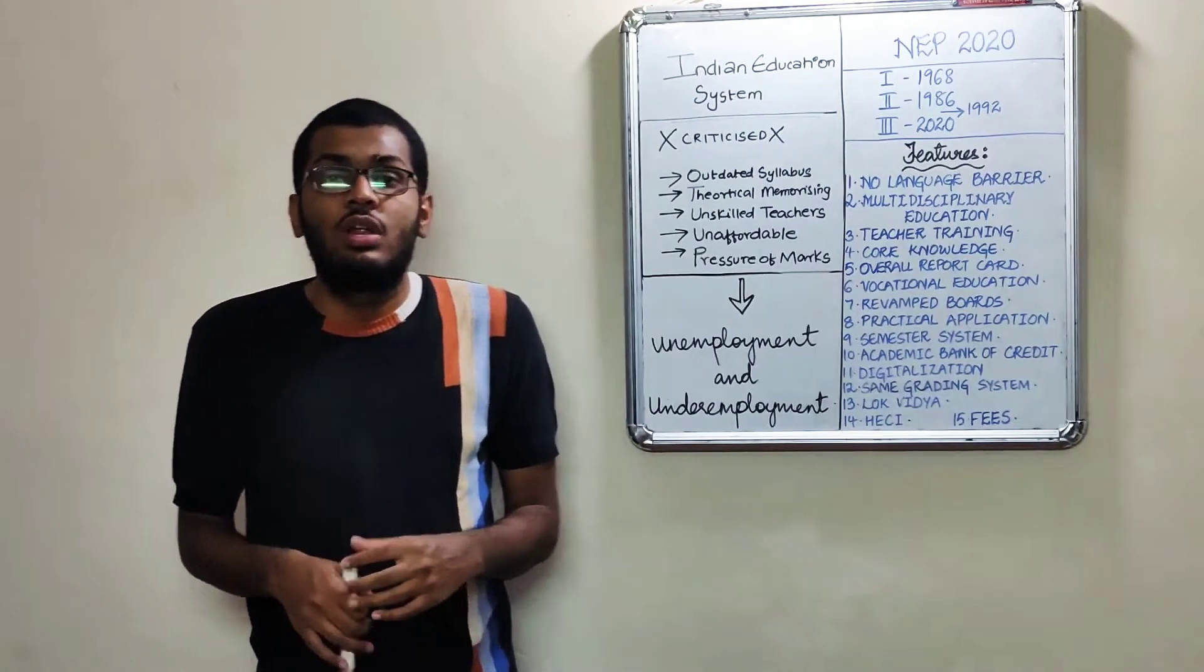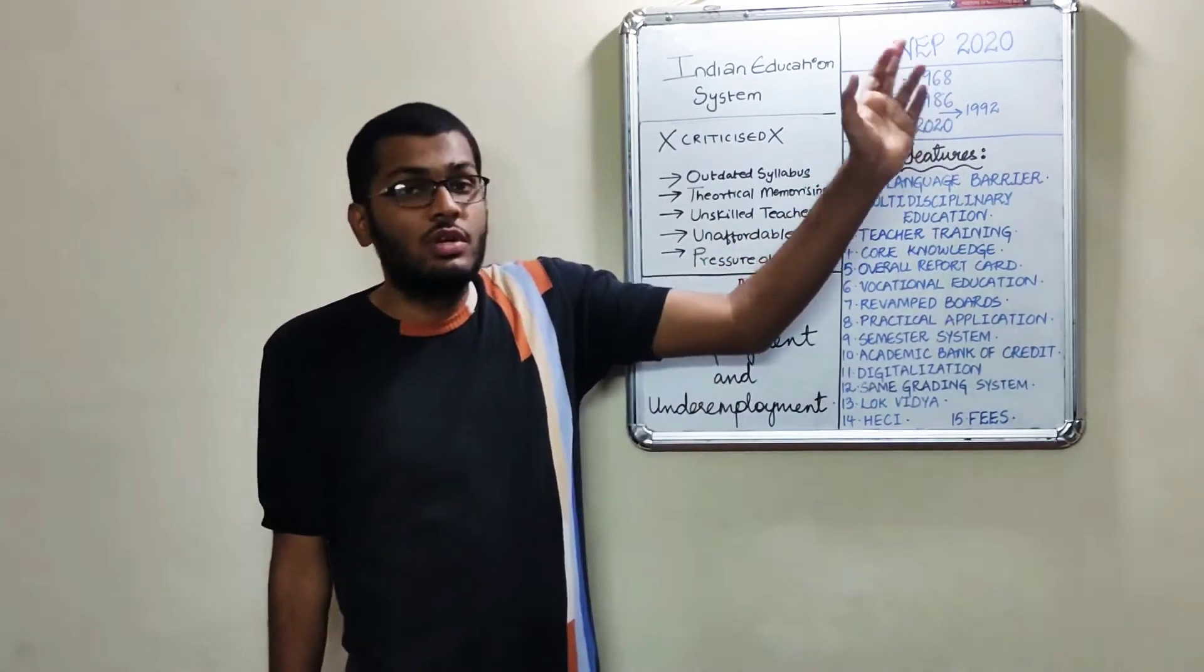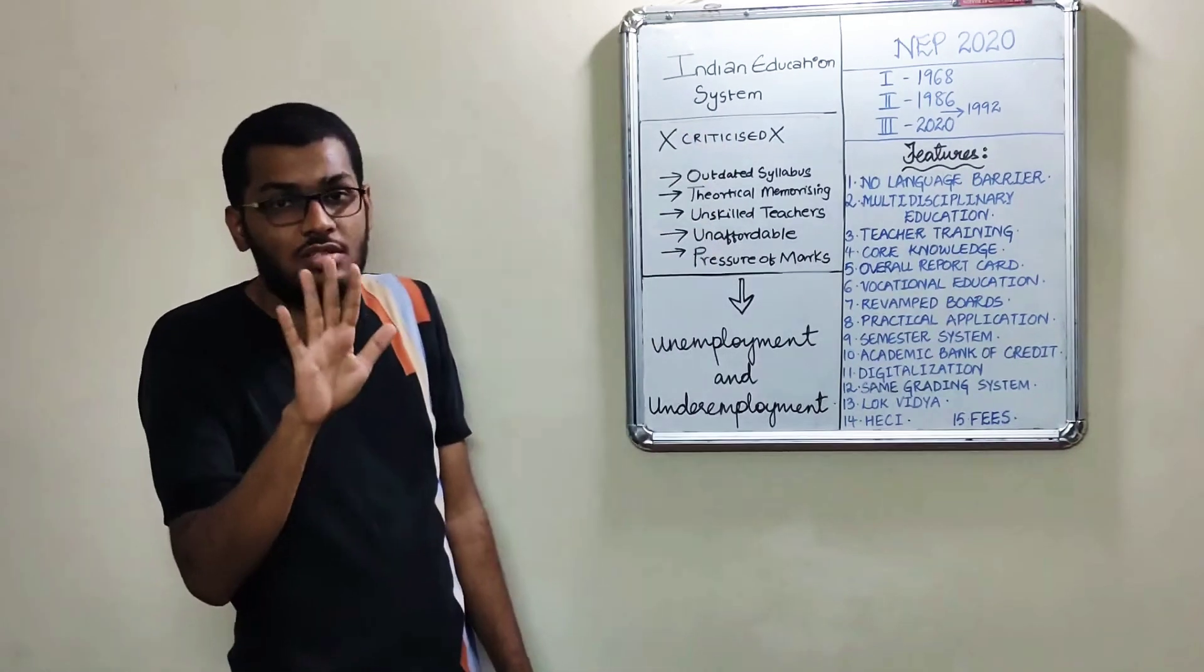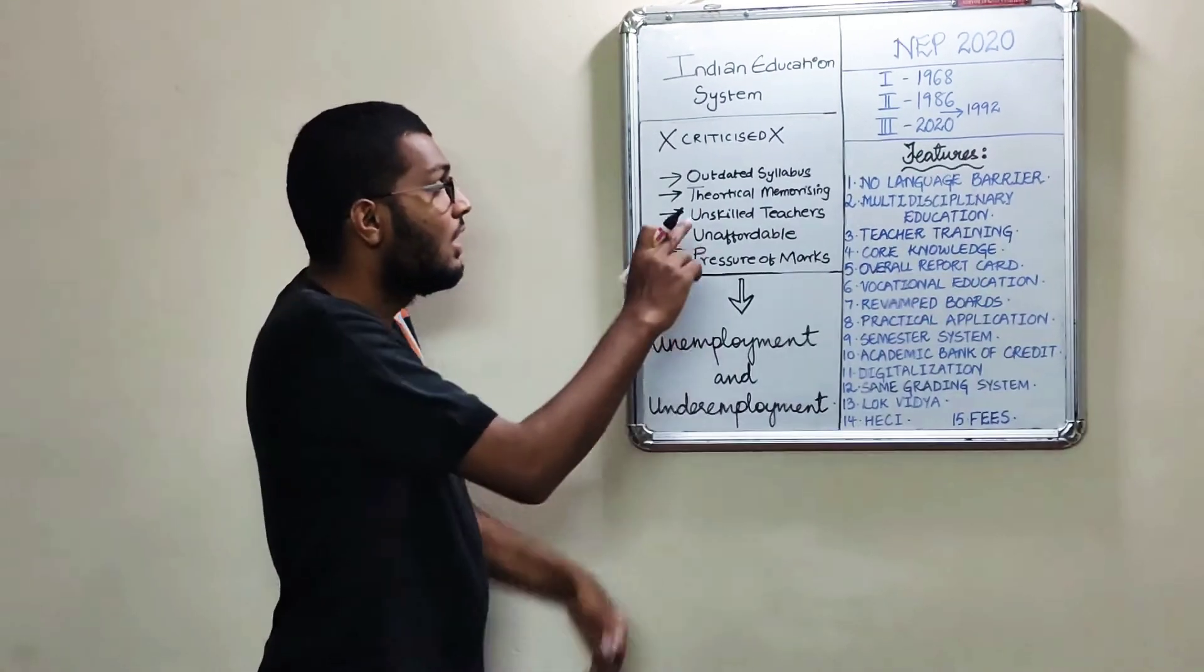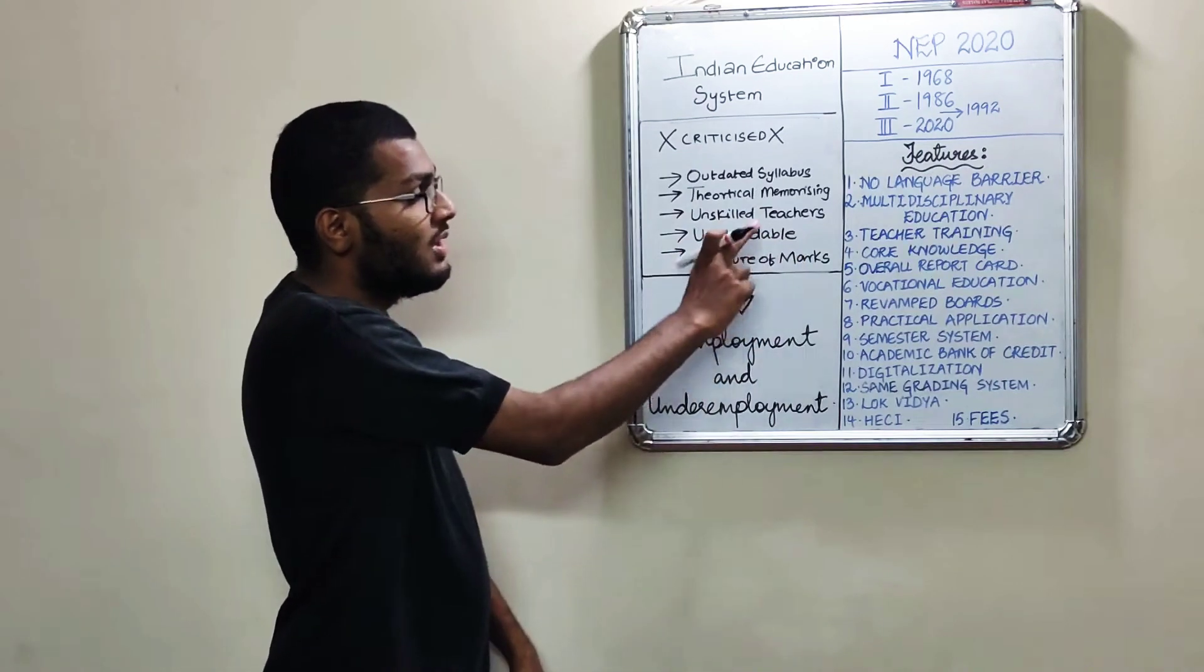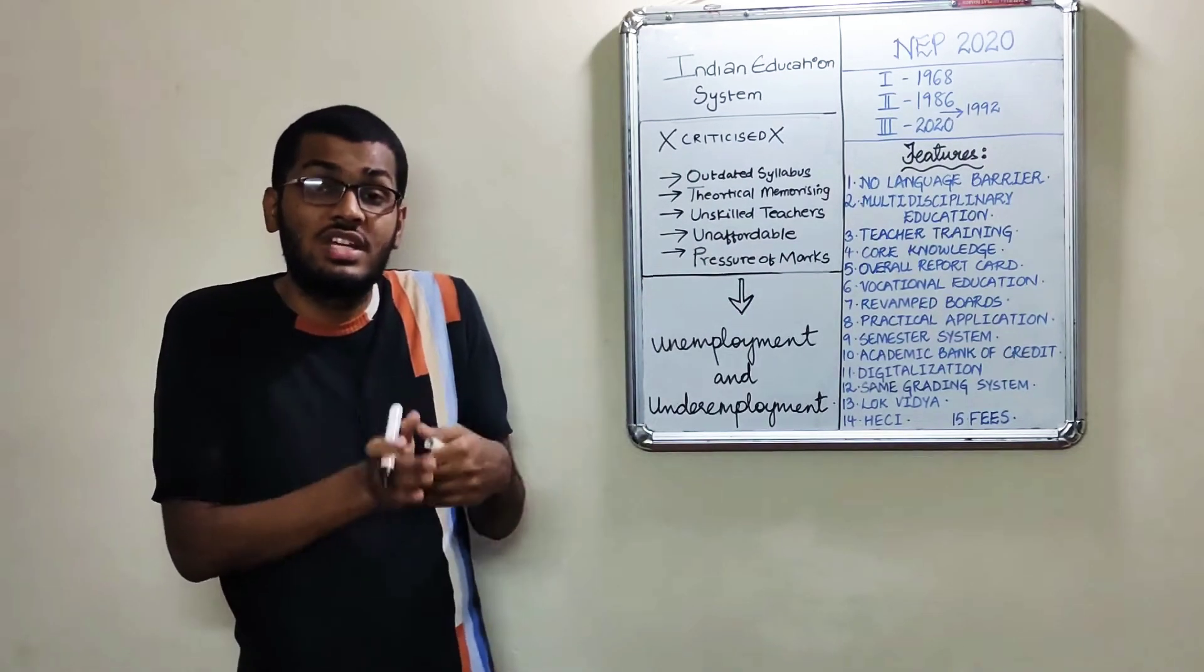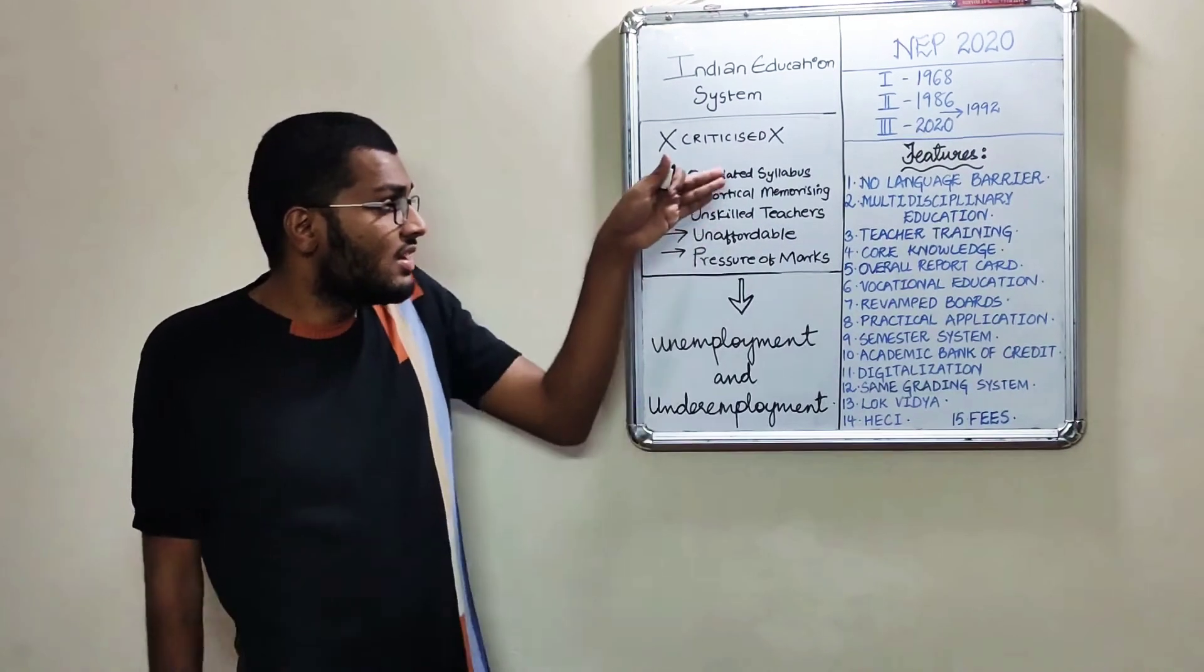Before starting what is National Education Policy 2020, I would like to take you to the background of it. The Indian education system has been largely criticized for five major reasons: outdated syllabus, theoretical memorizing, unskilled teachers, unaffordable education, and pressure of marks. These five reasons are why the Indian education system has been criticized for years now.